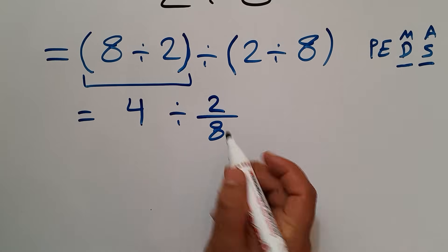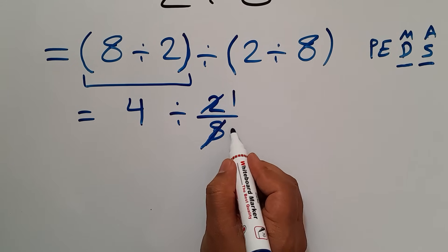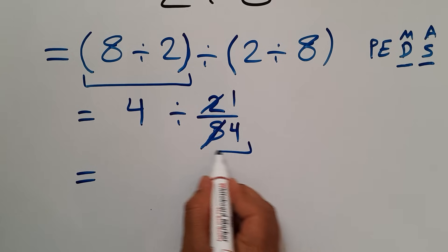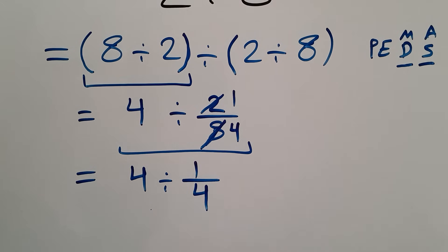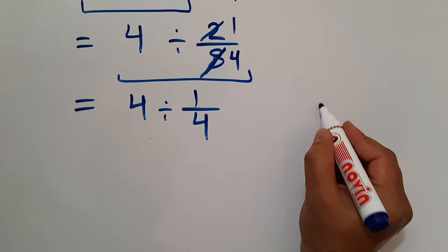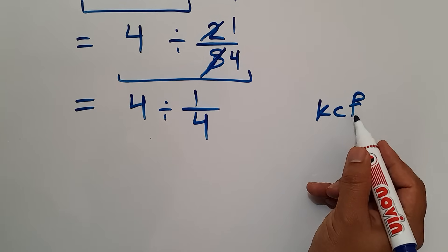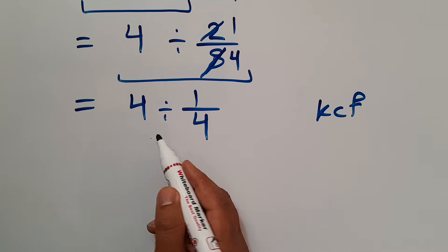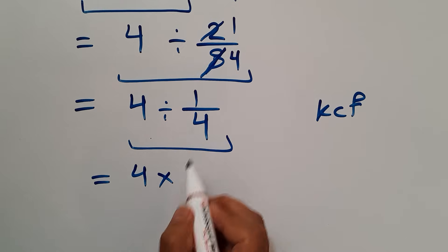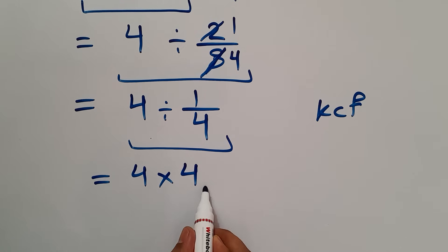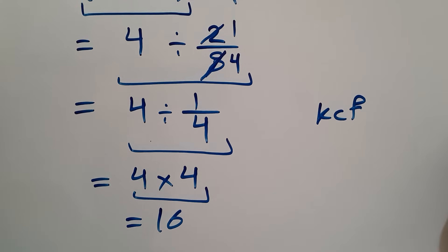Now let's simplify this fraction. 2 divided by 2 gives us 1, and 8 divided by 2 gives us 4. So we have 4 divided by 1 over 4. According to the KCF rule — K stands for keep, C stands for change, and F stands for flip — keep the first fraction, change division to multiplication, and flip the second fraction. We can write 4 times 4, and 4 times 4 equals 16. Therefore, our final answer to this problem is 16.